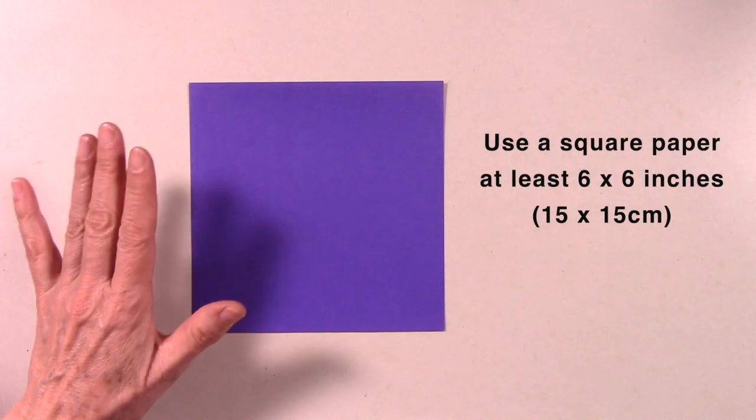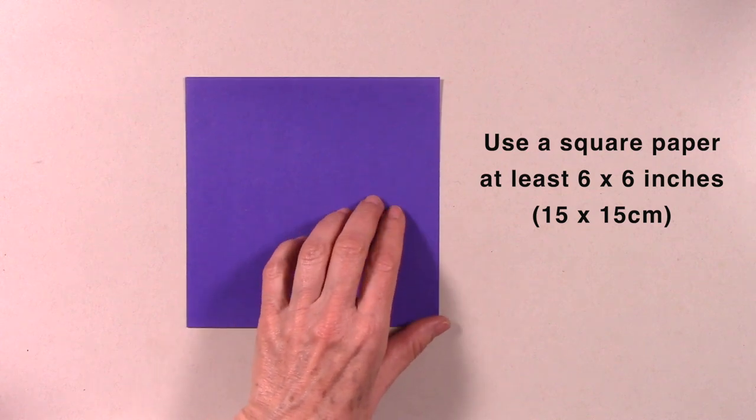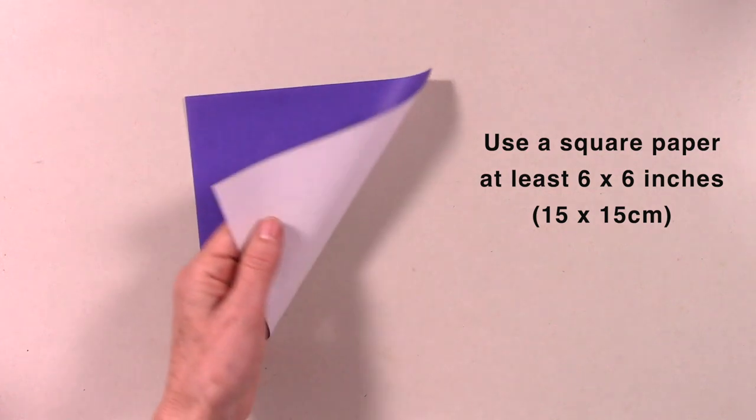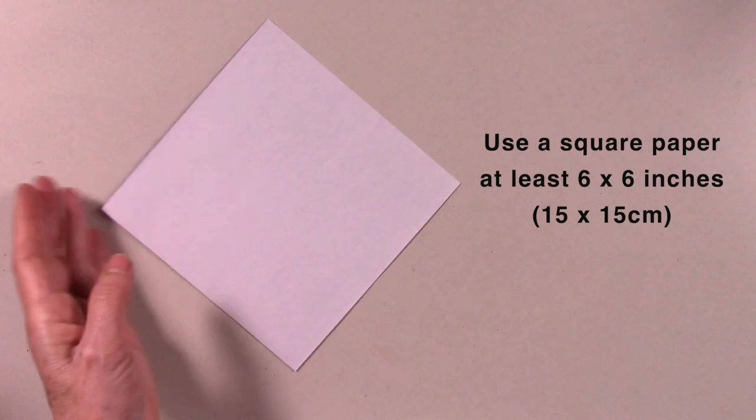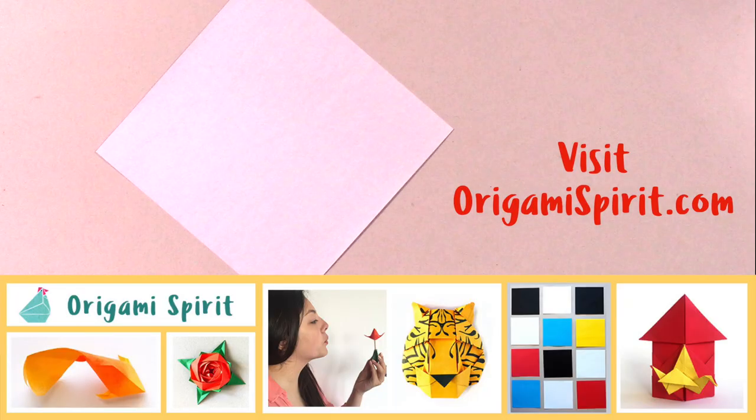To make each king we need one piece of paper. We are going to begin with the white side facing up. Visit our website OrigamiSpirit.com to see our related blog post and for more creative ideas on how to use origami.